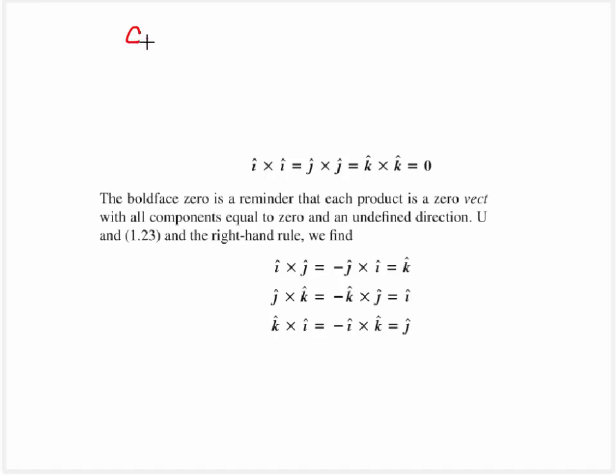Now to talk about cross products again. What a cross product is, is it's a way to multiply two vectors. And what it's going to produce is it's going to produce a vector that's going to be perpendicular to both of those vectors. So if you think about multiplying a unit vector by itself, there is no vector that could be perpendicular to that. And so the unit vector multiplied by itself must be equal to zero for both i-hat, j-hat, and k-hat directions.